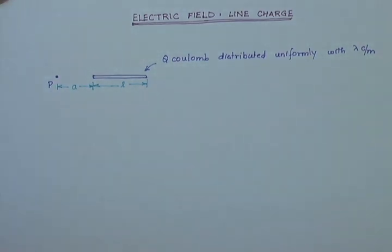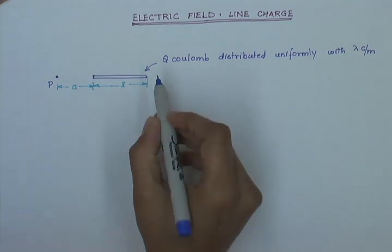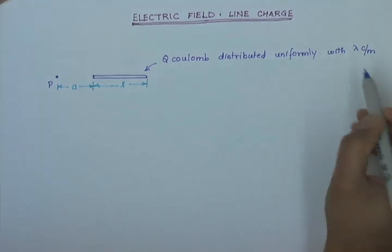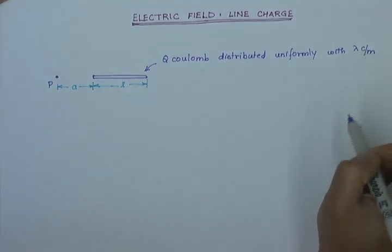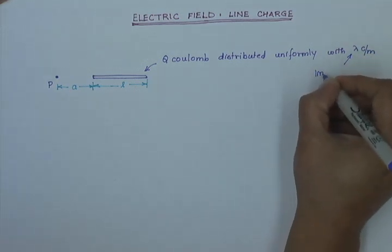Say for example, I have a rod, a very thin rod of length L and it has a charge of Q coulomb distributed uniformly on it such that we have lambda coulombs per meter and this is called as linear charge density.